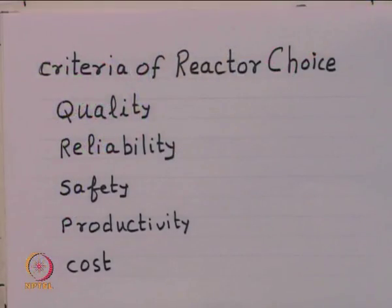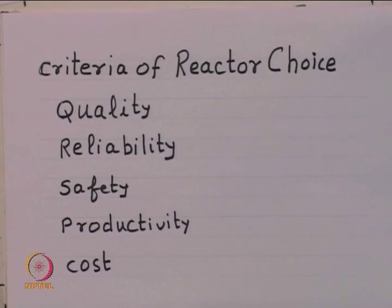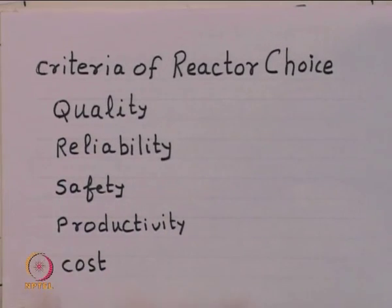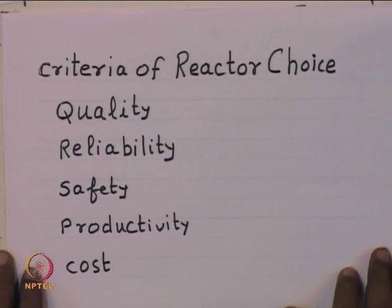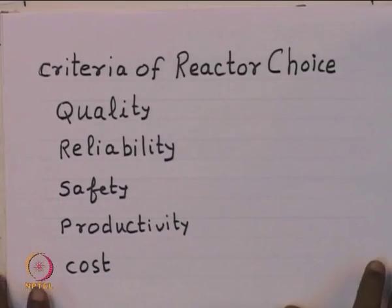The criteria for choice of reaction equipment depend on the quality of the product we want to produce, the reliability with which we want these equipment to work, the safety features associated with it, the productivity we desire, and the cost at which we would like to produce. Our choice will be dependent on the importance we attach to these five qualities — all of them are equally important, and the criteria should be such that every one of these qualities is satisfied to the extent required for the process.